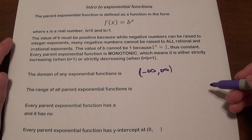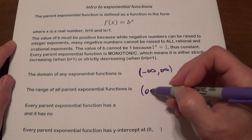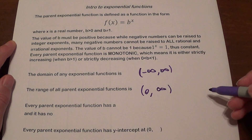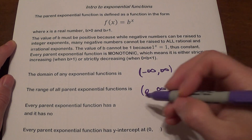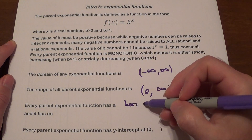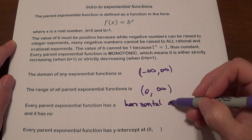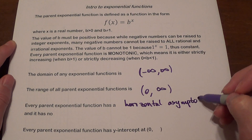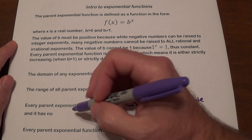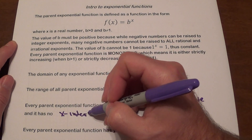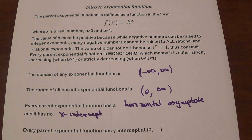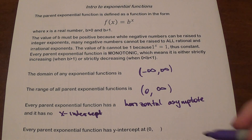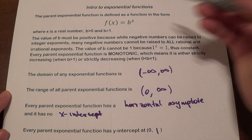The range of all parent exponential functions is going to be from 0 to infinity. Every parent exponential function also has a horizontal asymptote, and it also has no x-intercept as a result. Every parent exponential function is going to have a y-intercept at the point (0, 1), because if you substitute 0 in, anything to the power 0 gives you 1.